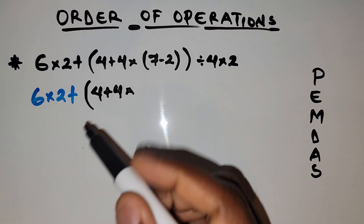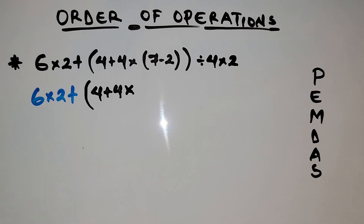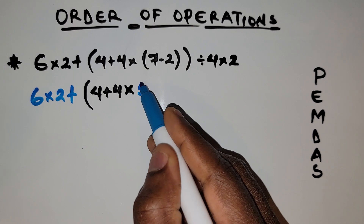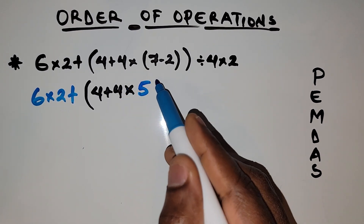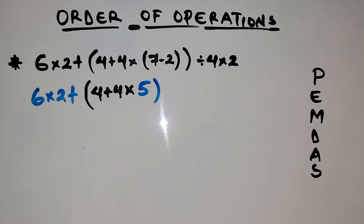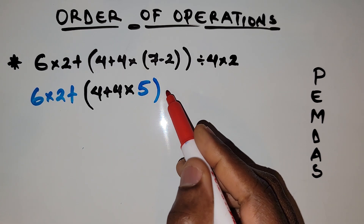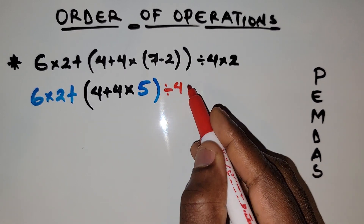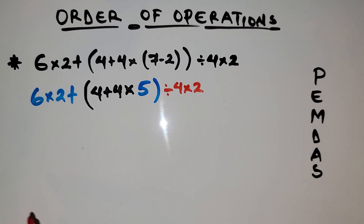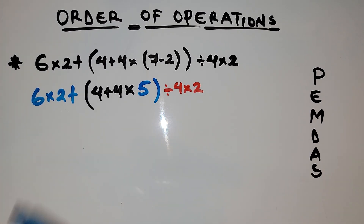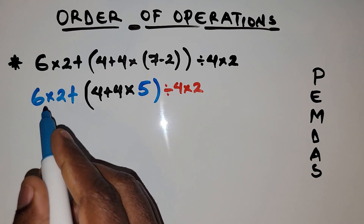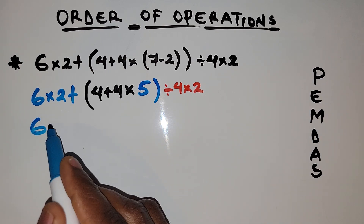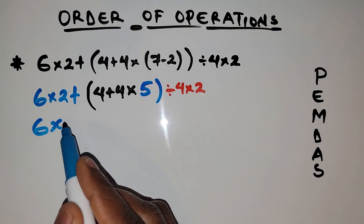So we have 6 times 2 plus, in parentheses, 4 plus 4 times — we solve the inner parentheses first, which is 7 minus 2. 7 minus 2 gives us 5. So that closes. We still have the outer parentheses here, and since our rule says parentheses come first, we want to make sure we complete the parentheses.